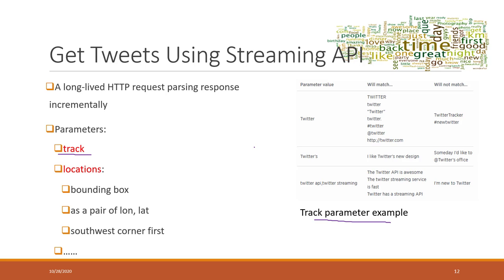The second most important parameter is called locations. Location can define which geographic areas you want to collect tweets from. If you define locations, only tweets within that defined location will be collected.